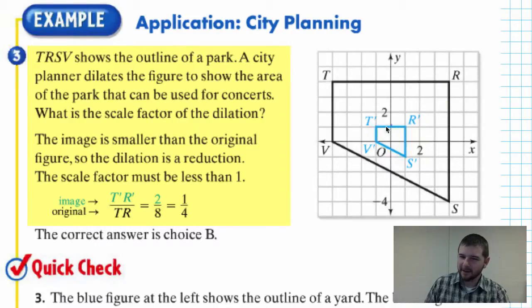Possibly the easiest way to find it is to consider the length of TR in our pre-image and consider the length of T prime R prime in our post-image. So TR: one, two, three, four, five, six, seven, eight, eight units long, and T prime R prime: two units long. So notice what we need to multiply eight by to get two.